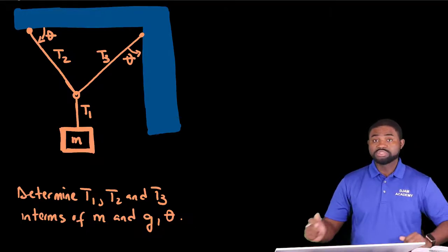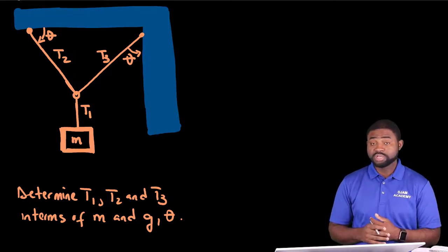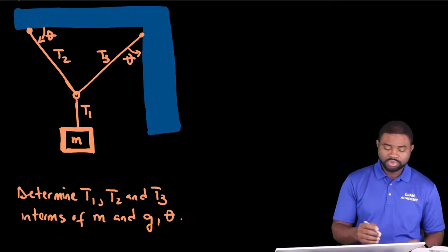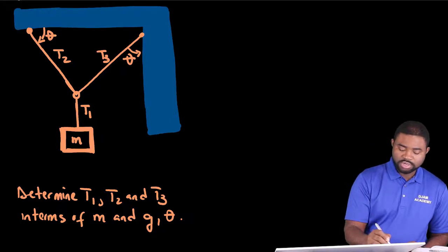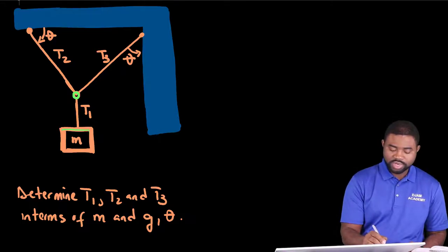My recommendation for a problem like this is for us to start with a free body diagram. There are two objects here that we can draw a free body diagram on. You have the knot, straddled by three strings, as well as you have the box.